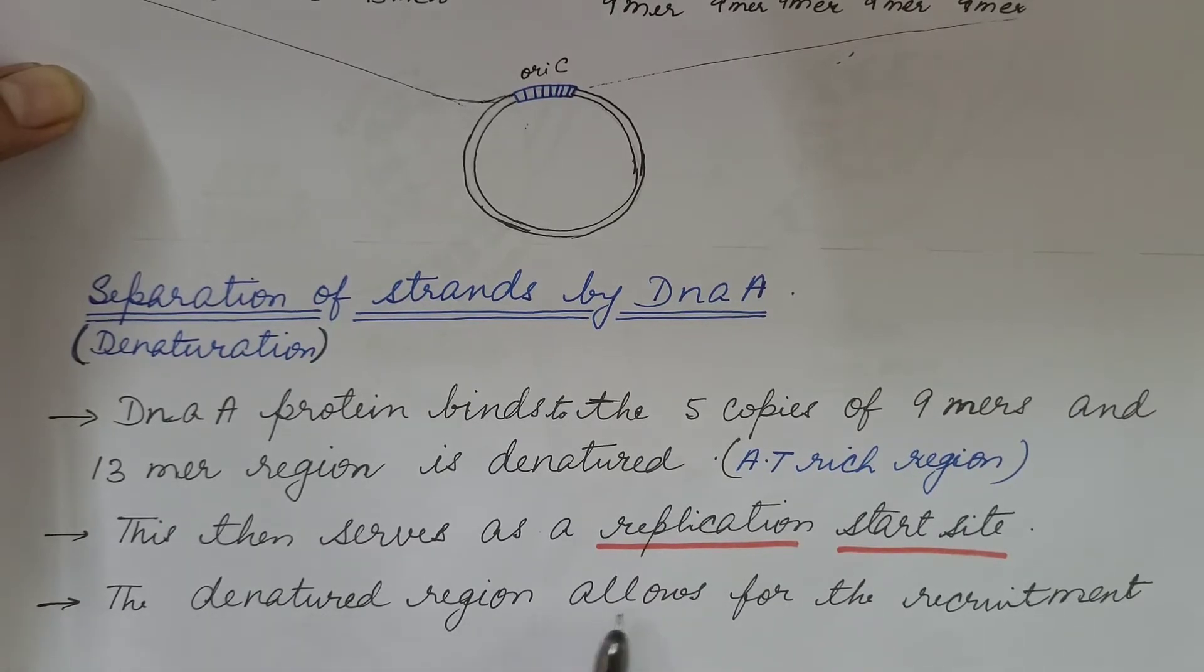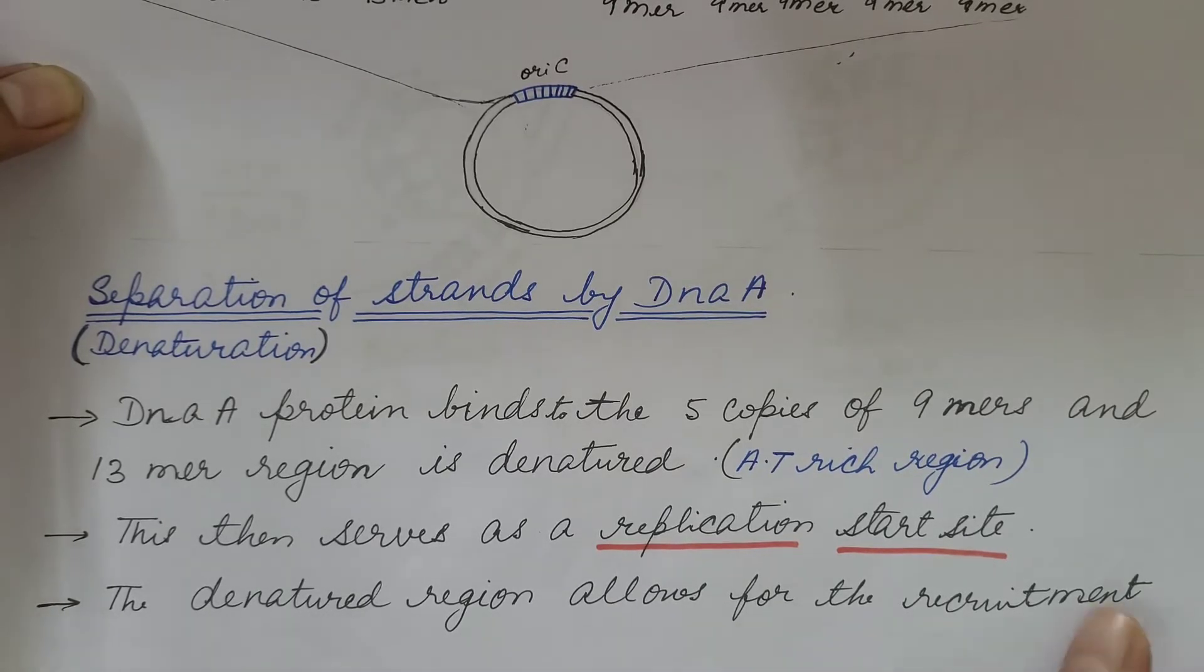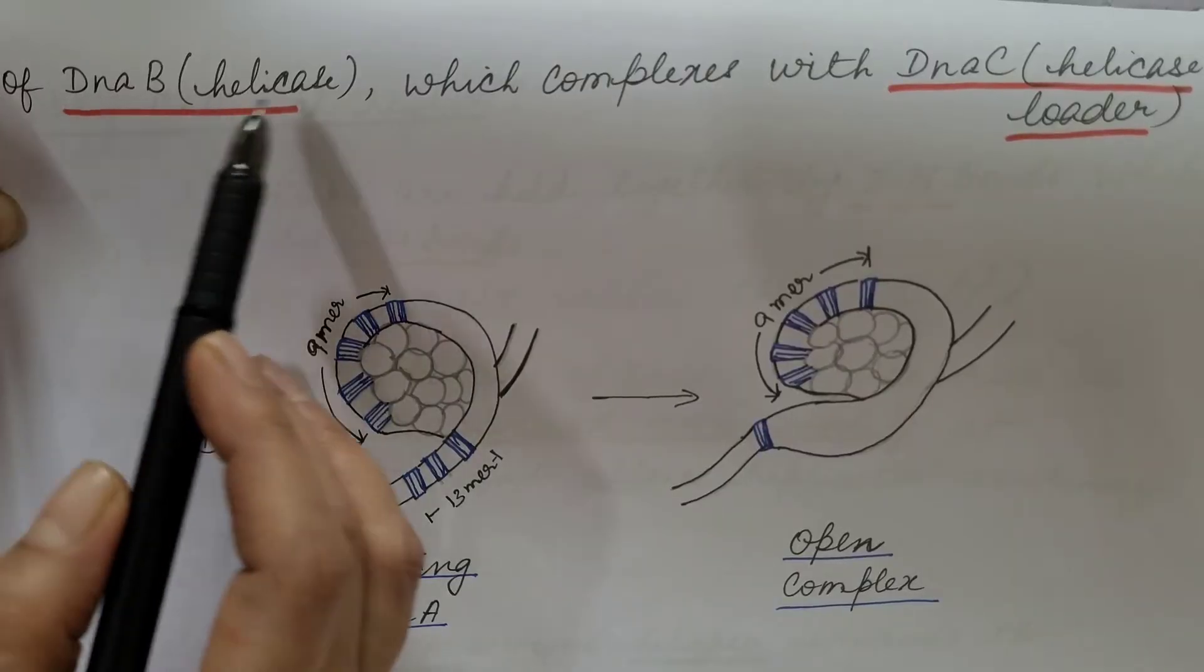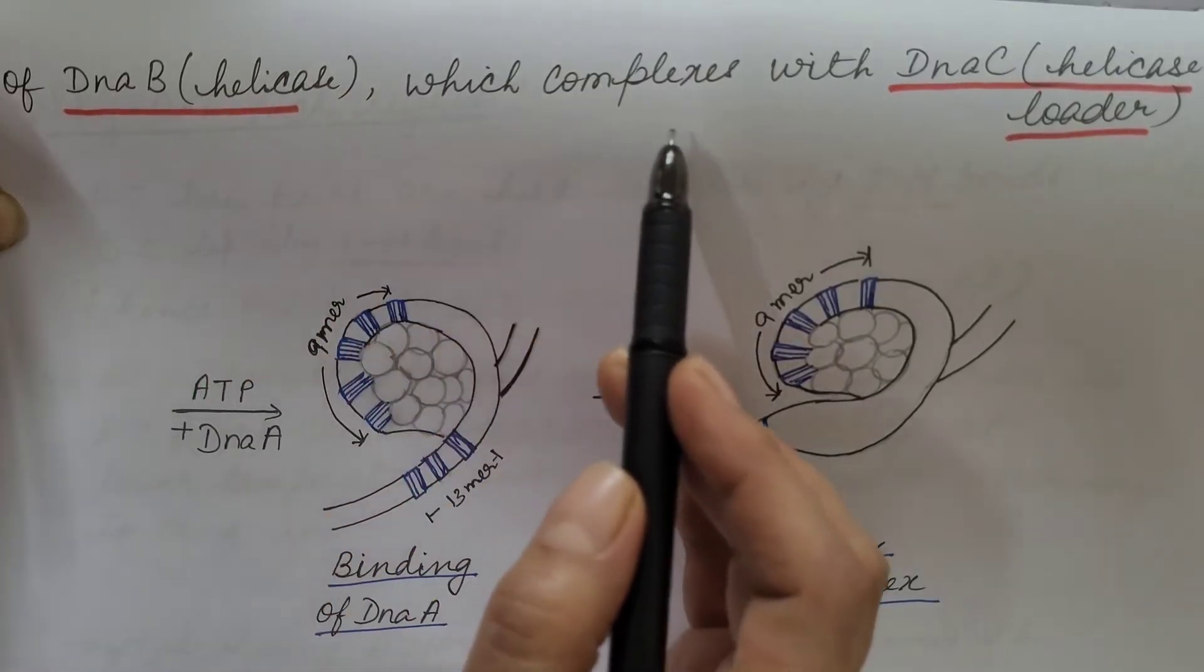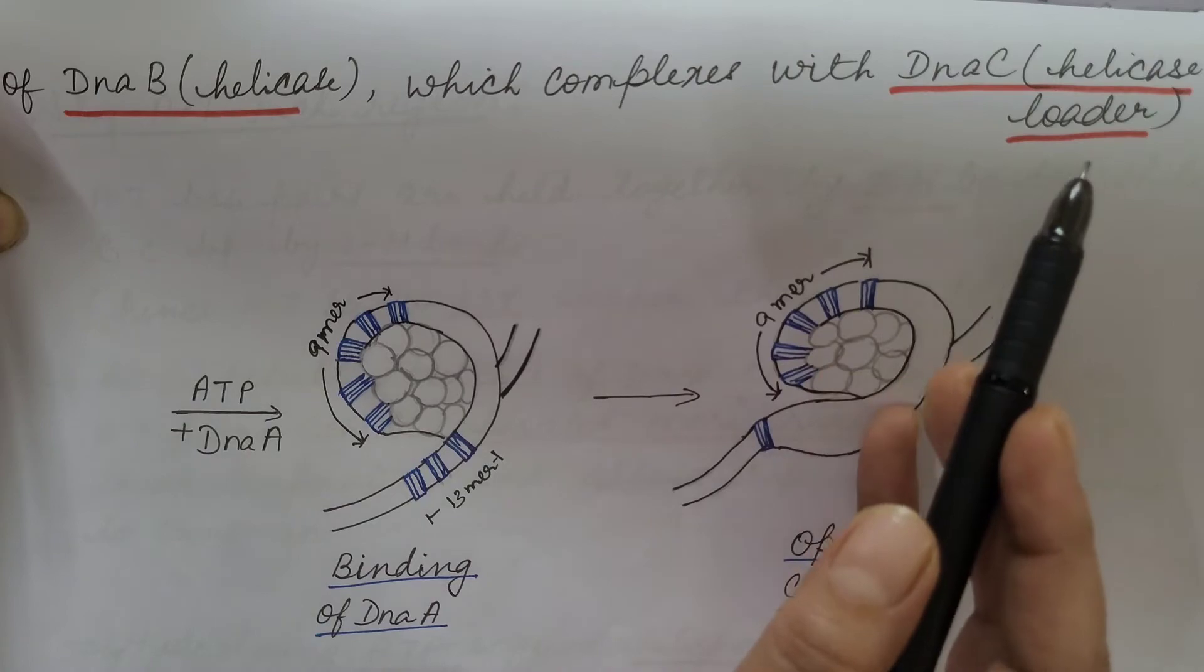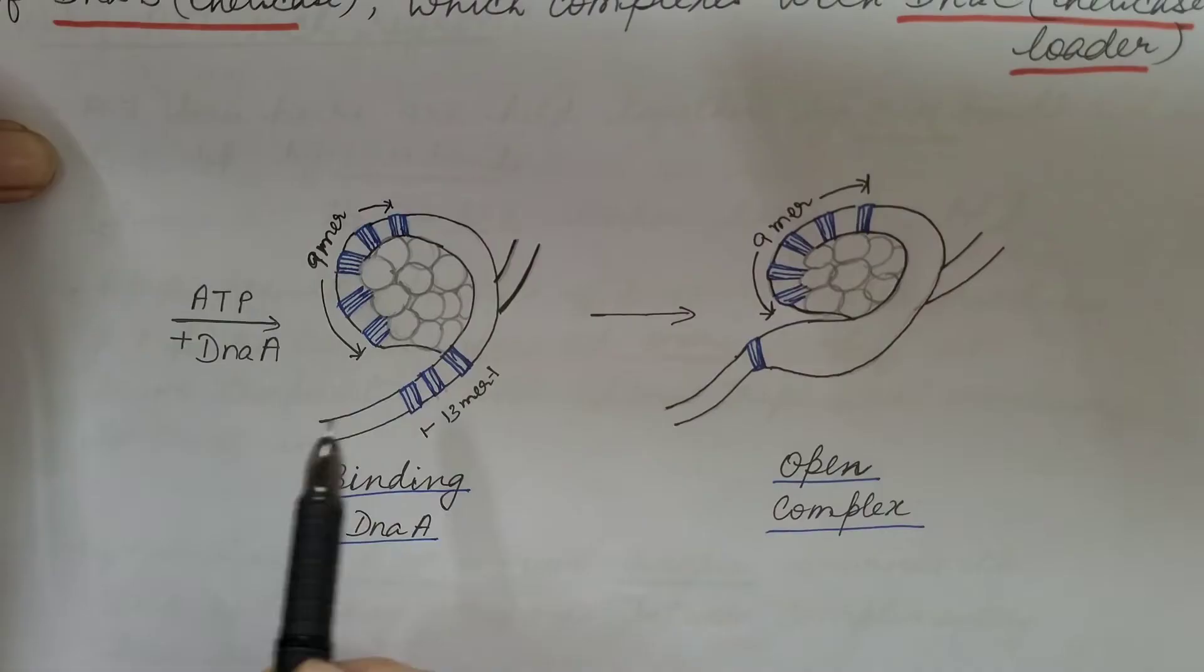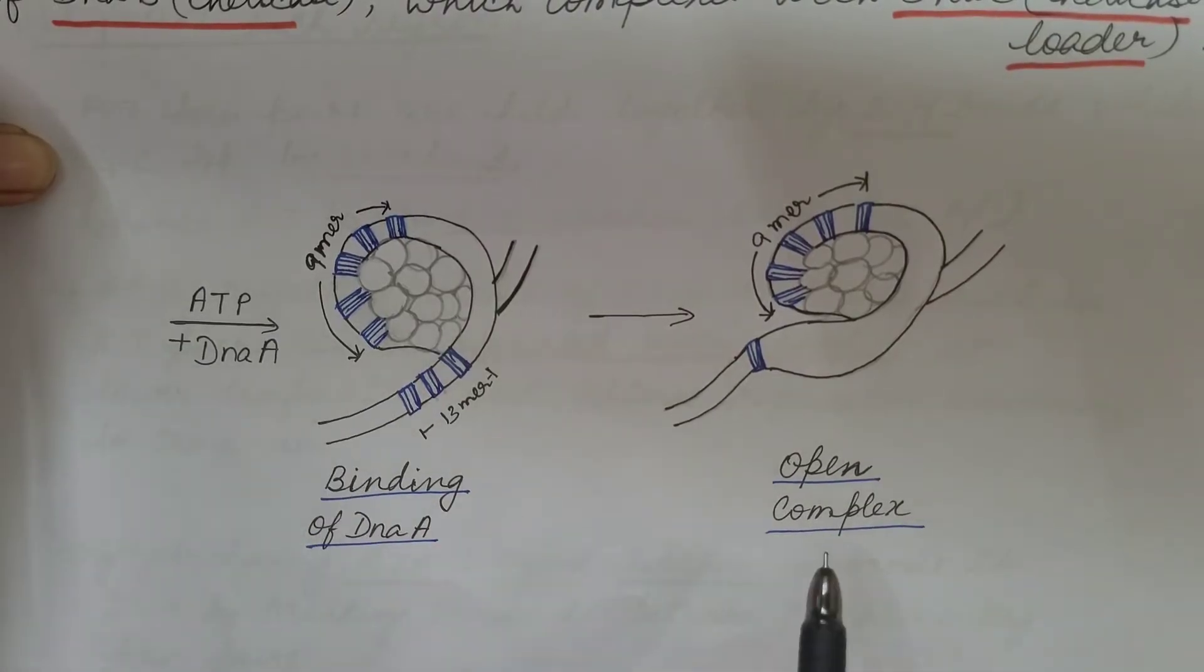The denatured region allows for the recruitment of DNA-B which is helicase which complexes with DNA-C which is helicase loader. So let us understand it here.